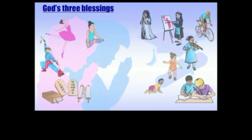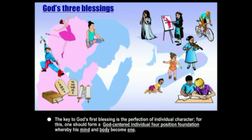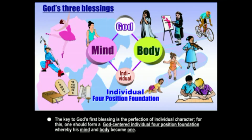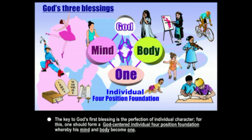The first of God's three great blessings — the first of three great purposes in our life — is the perfection of individual character: to become fruitful. A person should form a God-centered individual four-position foundation, where the mind and the body become one. In this four-position foundation, God is at the center. The four points — like a baseball diamond — have the mind in relationship with its partner, the body. When they come together in oneness, they create a whole being, and God can find joy in relating with that being. This first great blessing is an individual foundation of perfection and becoming one in heart and mind with God.